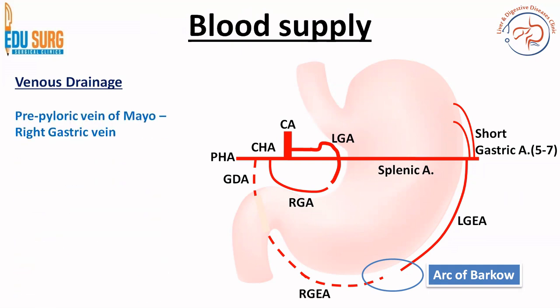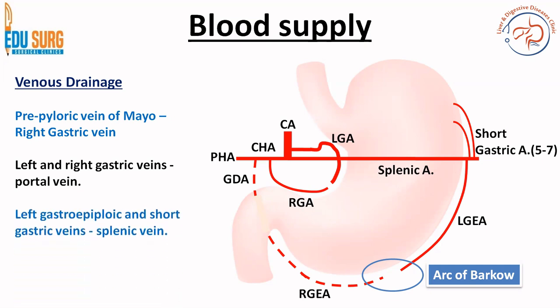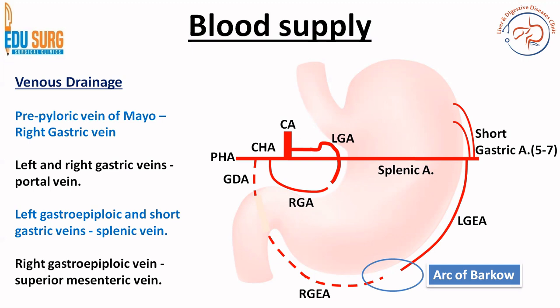Coming to venous drainage: the veins follow the arteries so they are named similarly, but the drainage is different and this is where the portal circulation will also come into play. The pre-pyloric vein of Mayo is an important landmark where you can identify the pyloric sphincter in the OT. The right gastric vein is where the pre-pyloric vein usually drains. Left and right gastric veins usually drain into the portal vein, whereas the left gastroepiploic vein and the short gastric veins drain into the splenic vein. The right gastroepiploic vein drains into the superior mesenteric vein. Most of the venous drainage of stomach goes into the portal circulation, and that is why in portal hypertension you can see gastric varices as well.